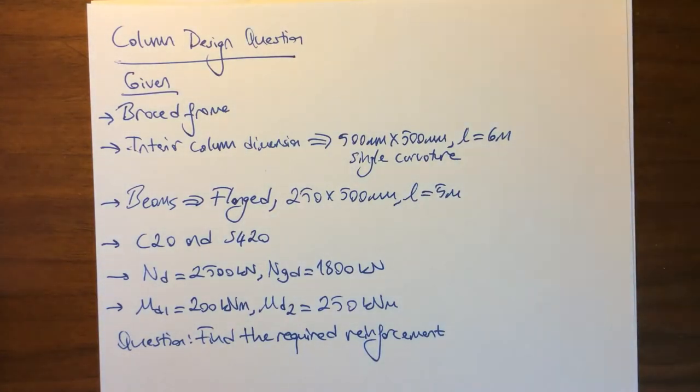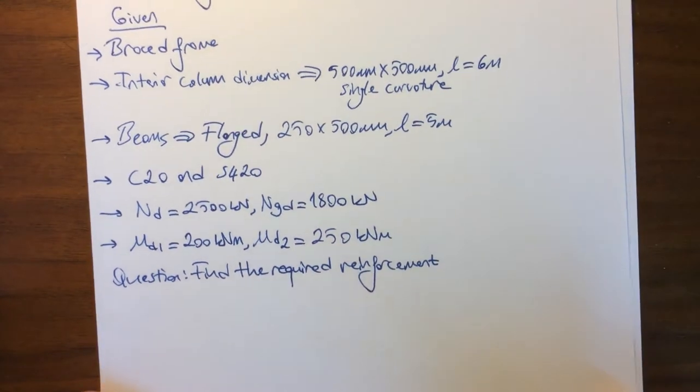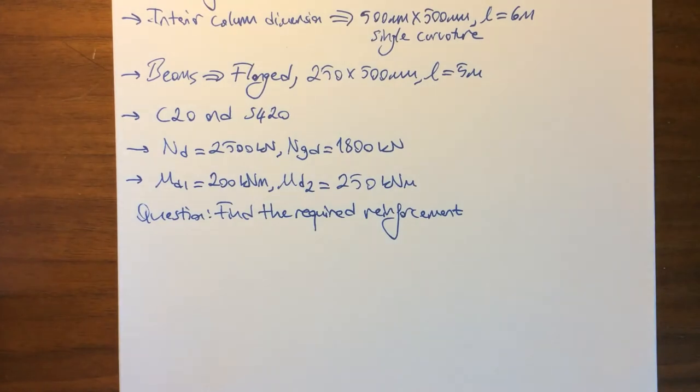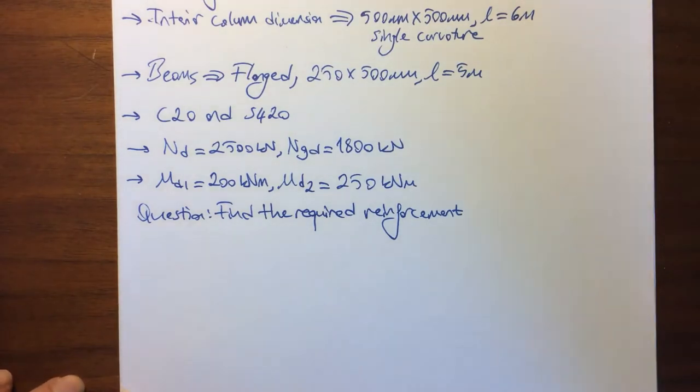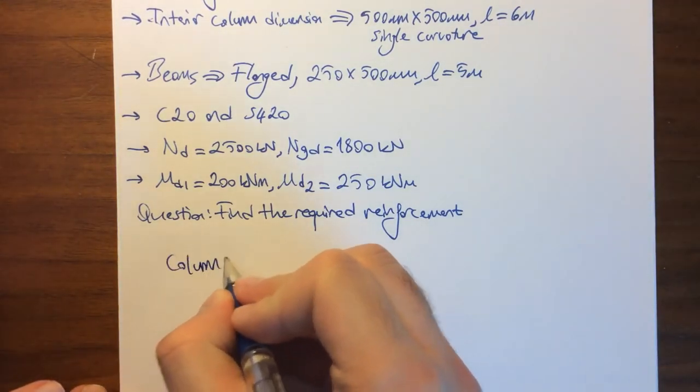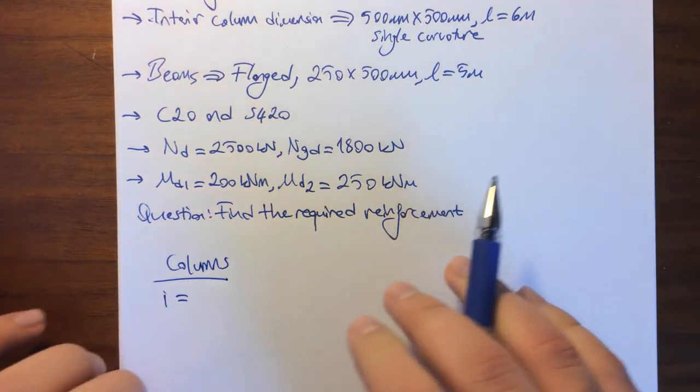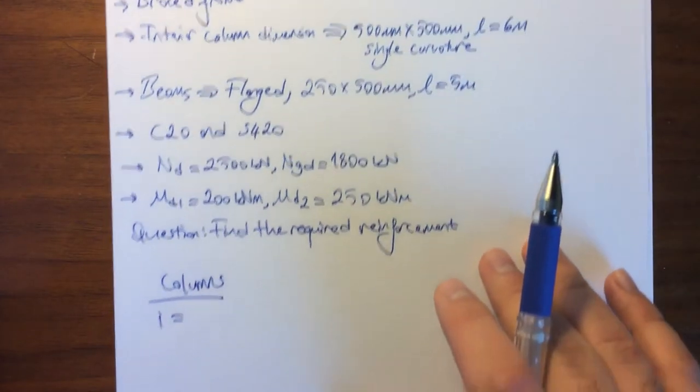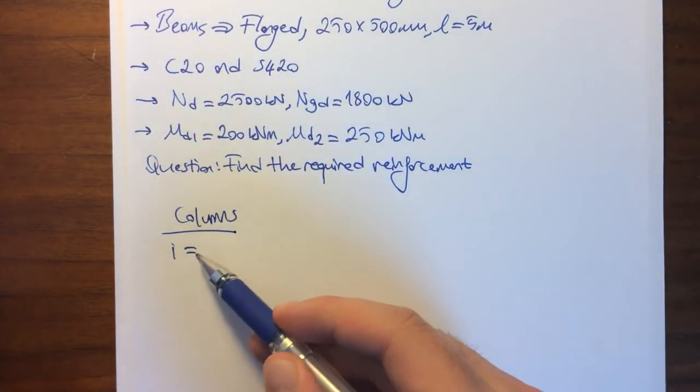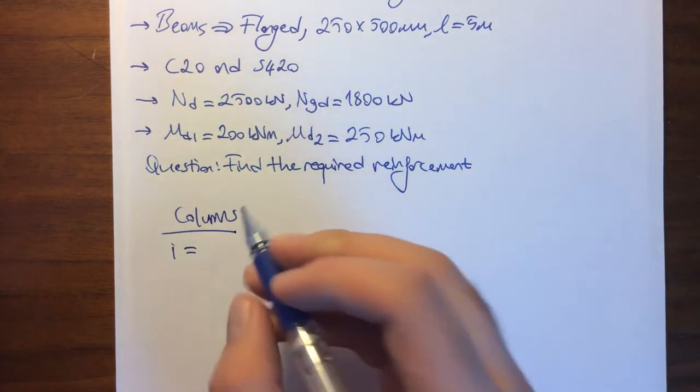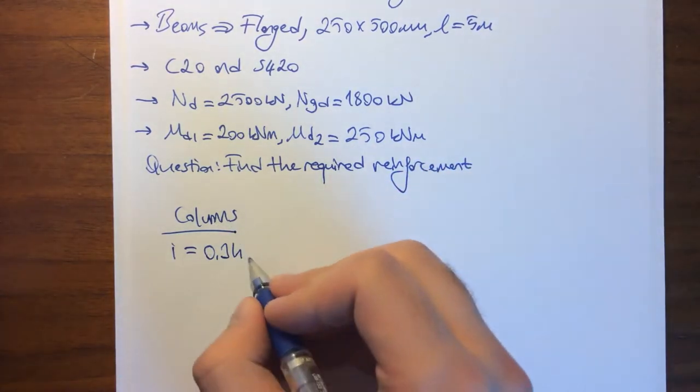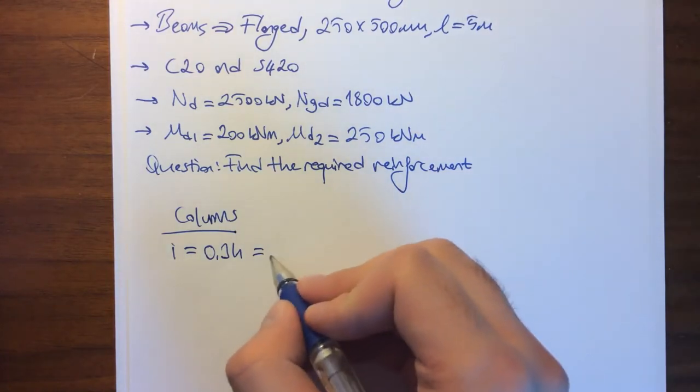Let's go over the solution step by step. As the first step, let's start working on the columns and understand their mechanical properties. For the columns, given as a rectangular section, we can calculate the radius of gyration, denoted by i, with the simplified formula 0.3 times the height. Since the height is 500 millimeters, we multiply 0.3 by 500 and get 150 millimeters.